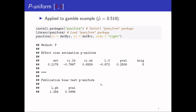We can also obtain a publication bias test based on the PUNIFORM method. There is a test statistic and a p-value to test whether there is publication bias. In this case, we cannot reject the null hypothesis of no publication bias.